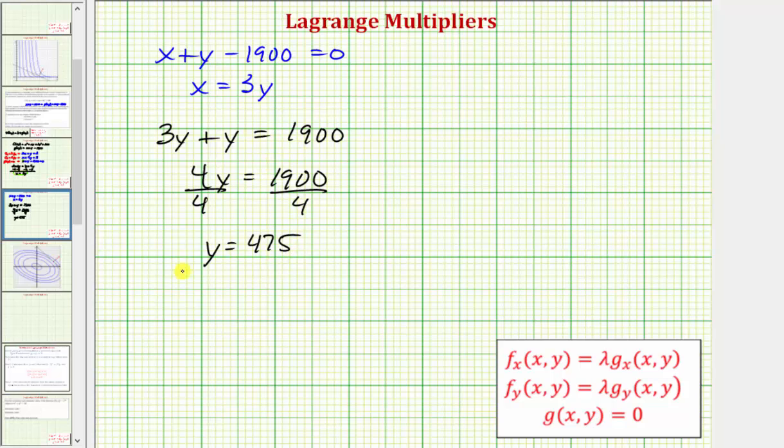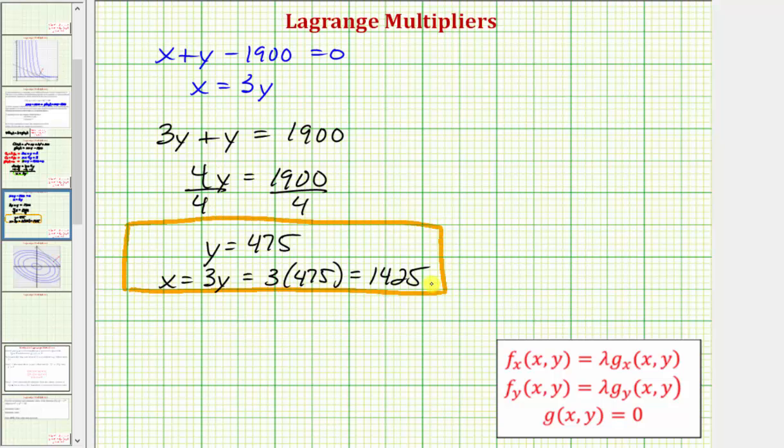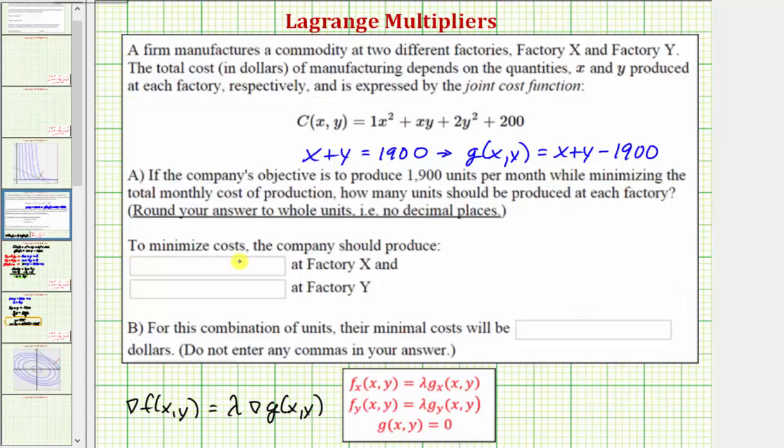Now that we know y equals 475, we also know x equals 3y, so x must equal 3 times 475, which is equal to 1,425. So this is the x and y value that minimizes the cost function. So going back to our question, factory X should produce 1,425 units, and factory Y should produce 475 units.